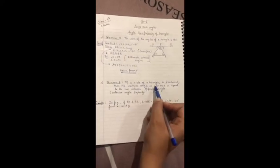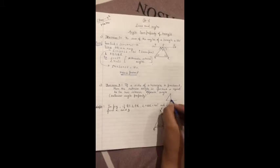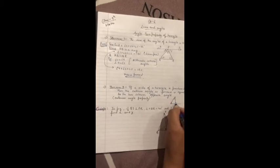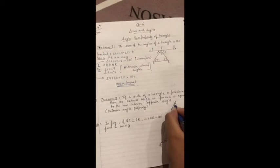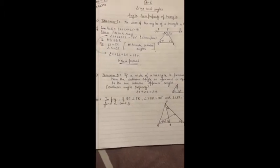So we had to prove that the sum of the angles of triangle is 180 degree. Next, the theorem is if a side of a triangle is produced, then the exterior angle is equal to the two interior opposite angles. Interior opposite means under but opposite. That means angle 1 plus angle 2 is equal to angle 3.